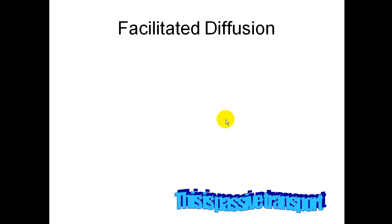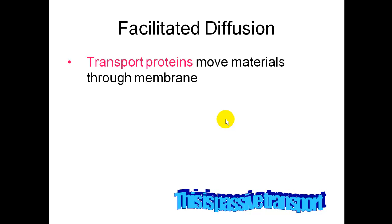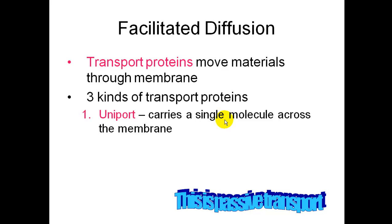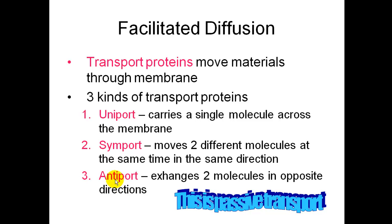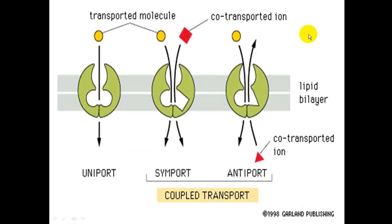Facilitated diffusion is passive transport — no energy is required. It is different from regular diffusion in that it involves proteins embedded in the membrane. Transport proteins move materials through the membrane. There are three kinds: uniport carries a single molecule across the membrane; symport moves two different molecules at the same time in the same direction simultaneously; and antiport exchanges two molecules in opposite directions. A picture shows uniport carrying one molecule through, symport with two molecules going the same direction through the lipid bilayer, and antiport with molecules going in opposite directions.